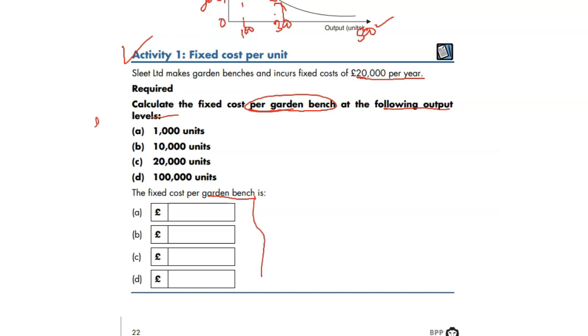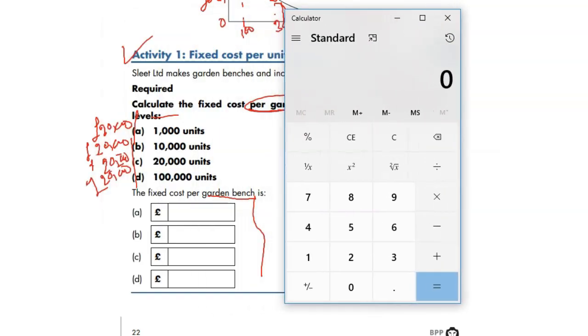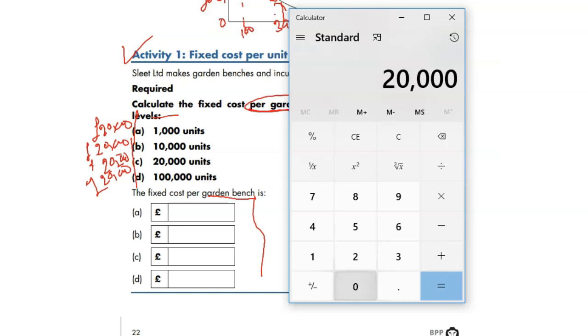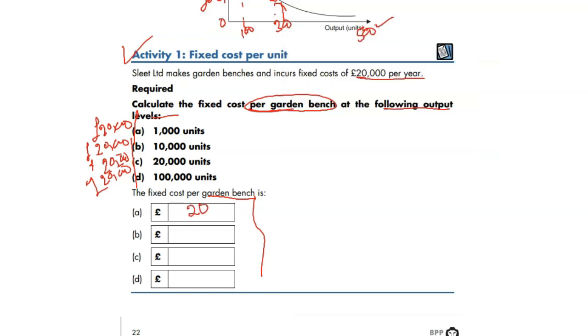Fixed cost per garden bench - you know what to do. 20,000 divided by 1,000. Starting with number one, 20,000 divided by 1,000 units equals 20. That's the cost per unit.